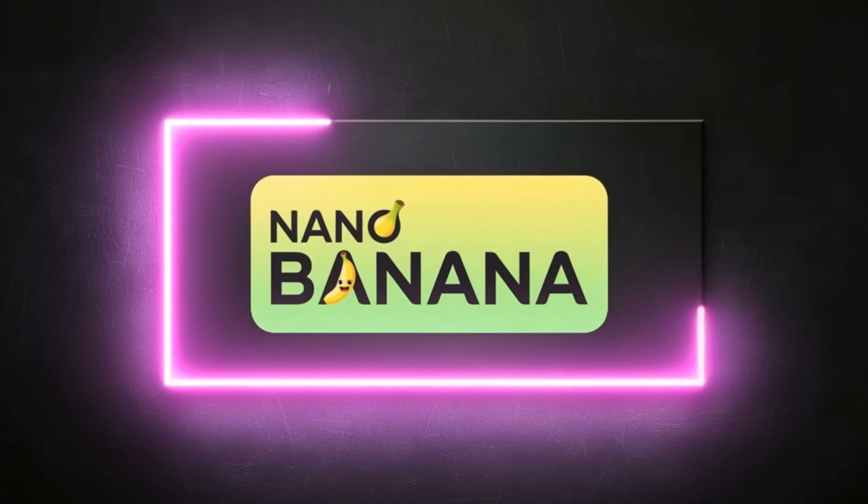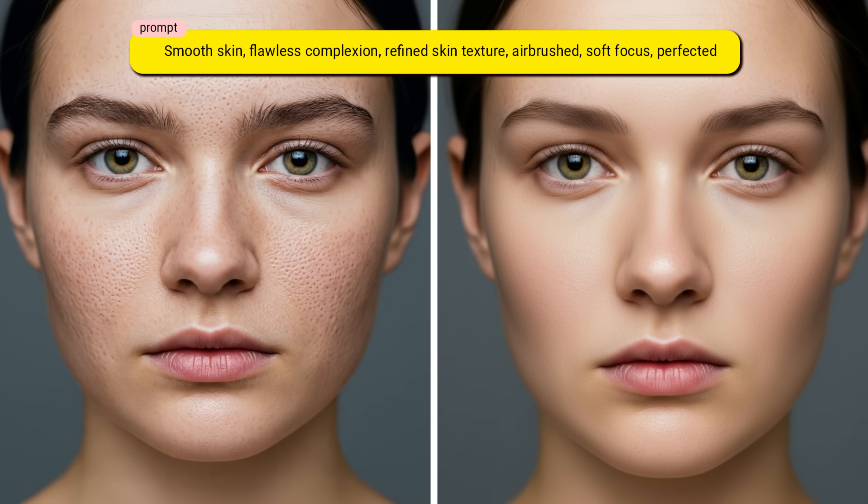With Google's Nano Banana AI, editing faces has become almost magical. Normally, if you have an image with porous skin texture, fixing it manually could take hours of retouching. But here, with just one simple prompt, you can turn porous skin into a silky smooth texture, instantly.